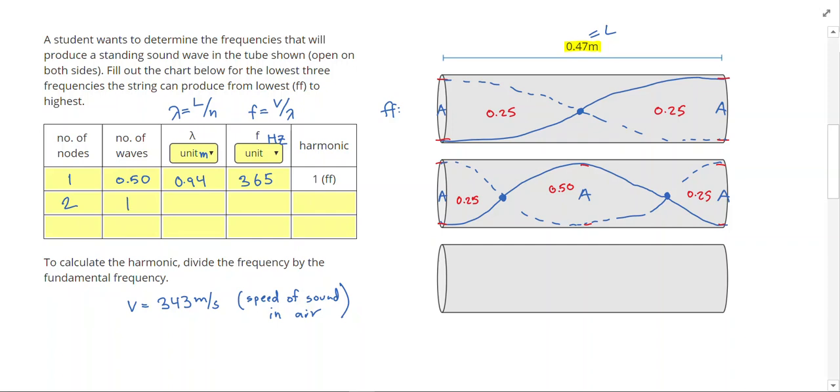My wavelength, I could do L divided by n. But since n is just one, I have a full wave here. So that full wave is 0.47 meters long. So now I do 343, again the speed of sound, divided by 0.47, and I get 730 hertz. That's my frequency. To get the harmonic, the hint below tells us that we can take the frequency and divide it by the fundamental frequency. So 730 over 365, this should give us a full number, and this gives us 2.